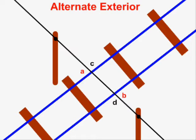Angles A and B in this diagram are alternate exterior. They are alternate because they are found on opposite sides of the transversal — opposite sides of the wire — and they are exterior because they are both found on the exterior of the pair of parallel lines, outside of the train tracks.